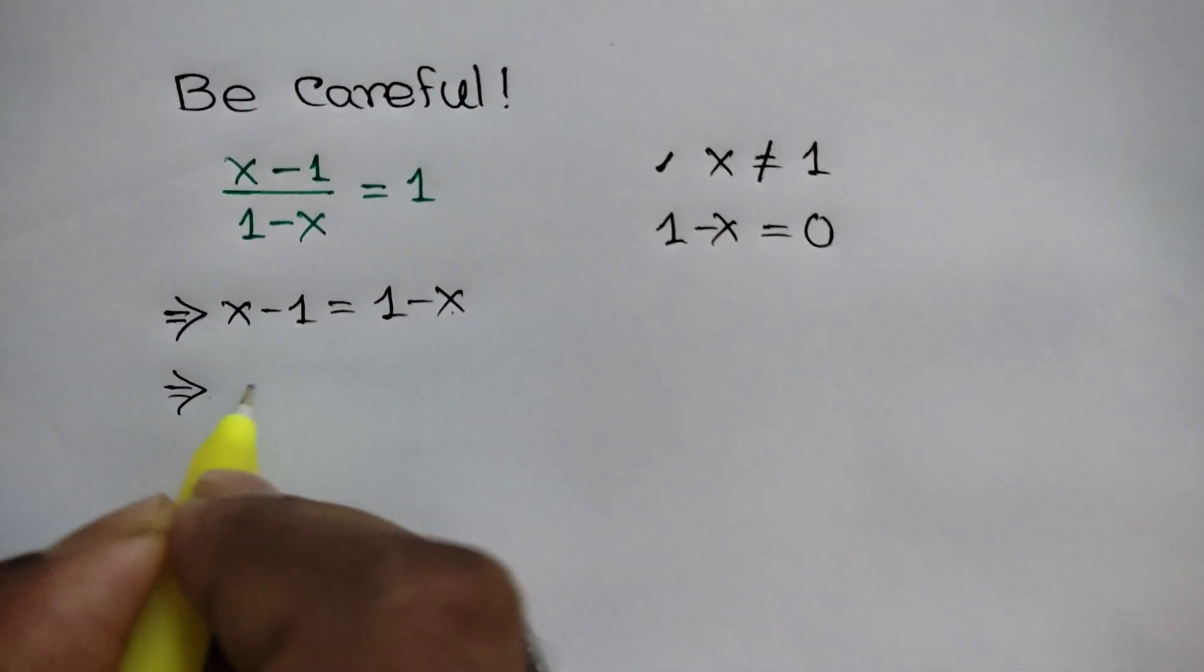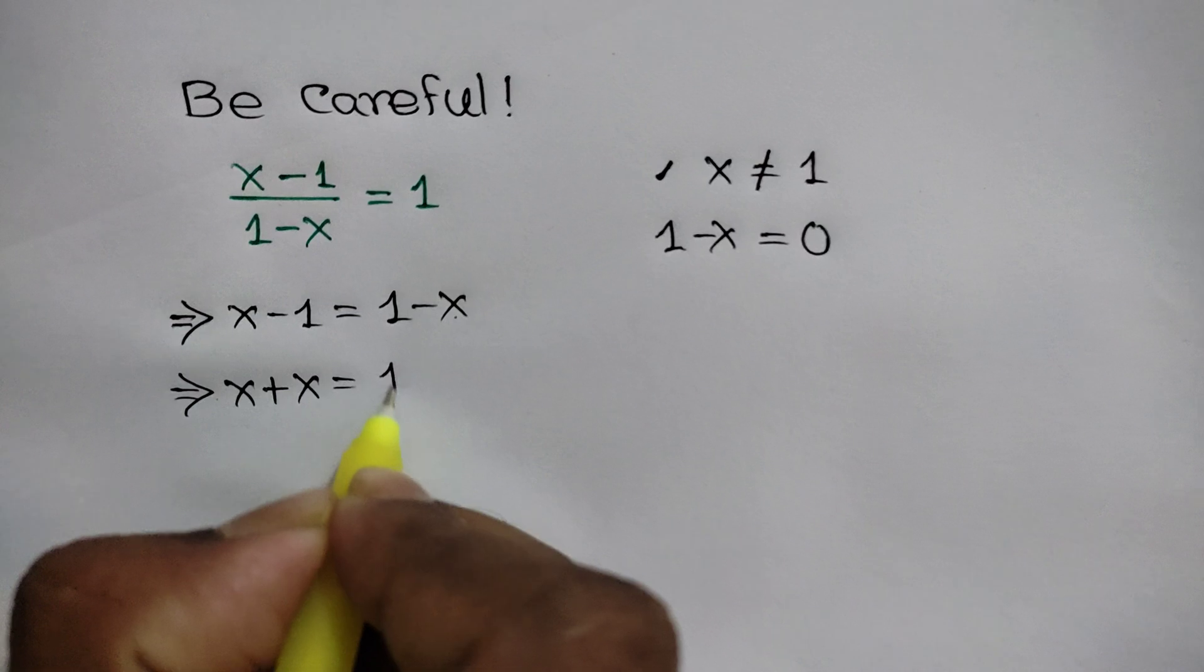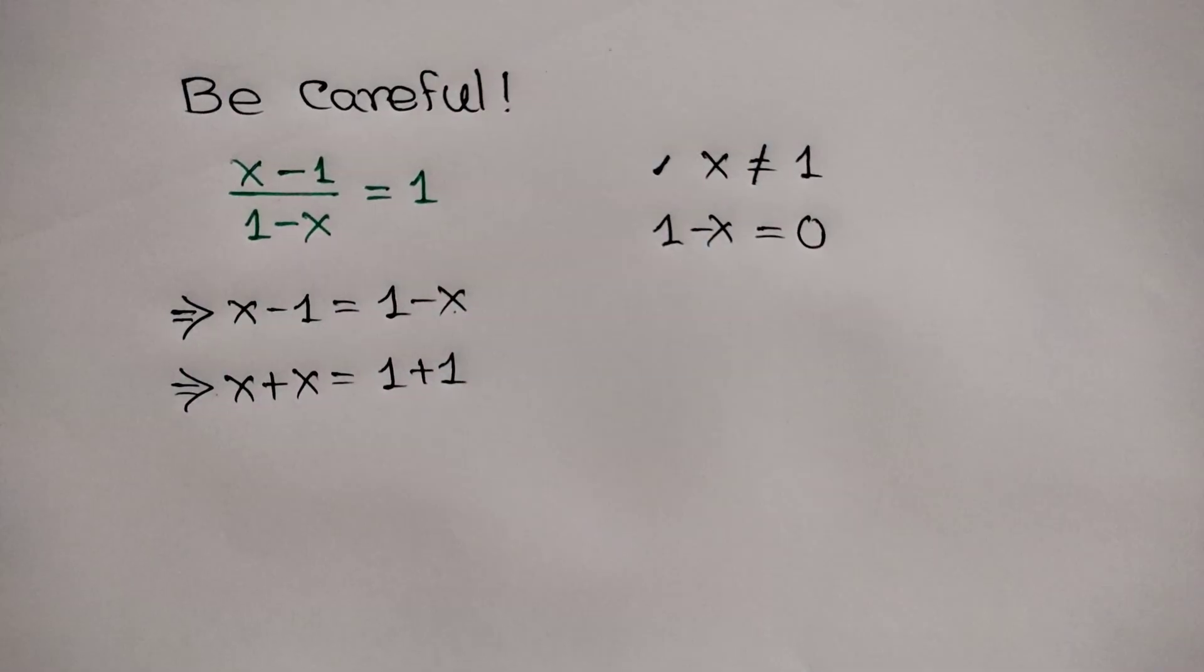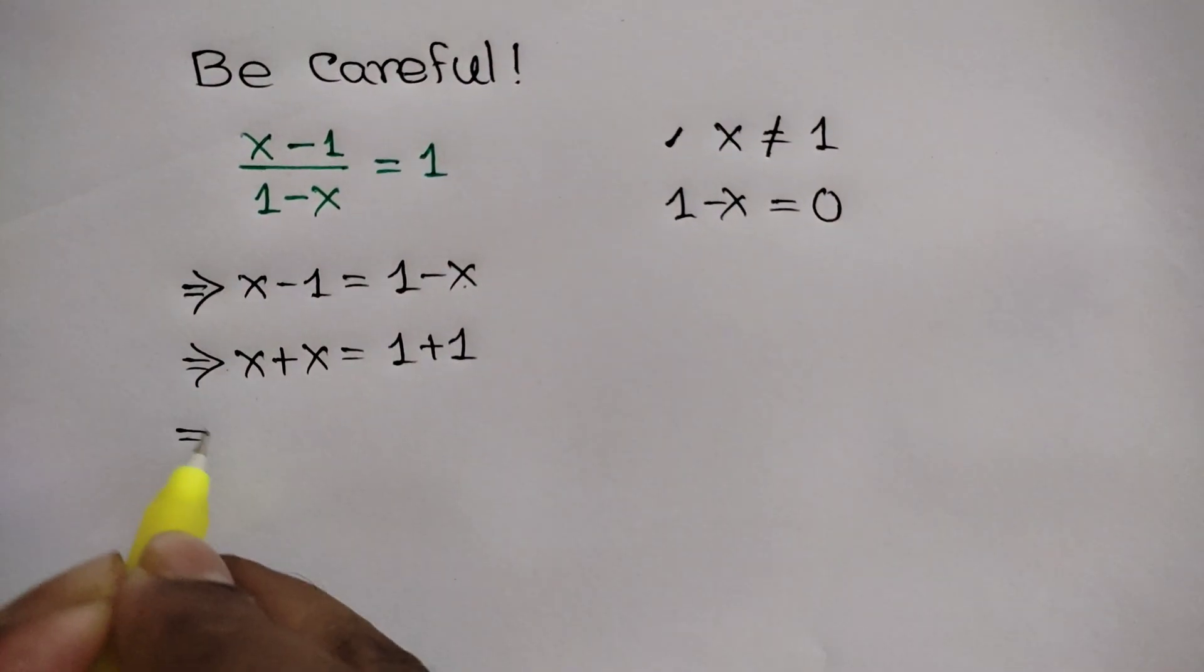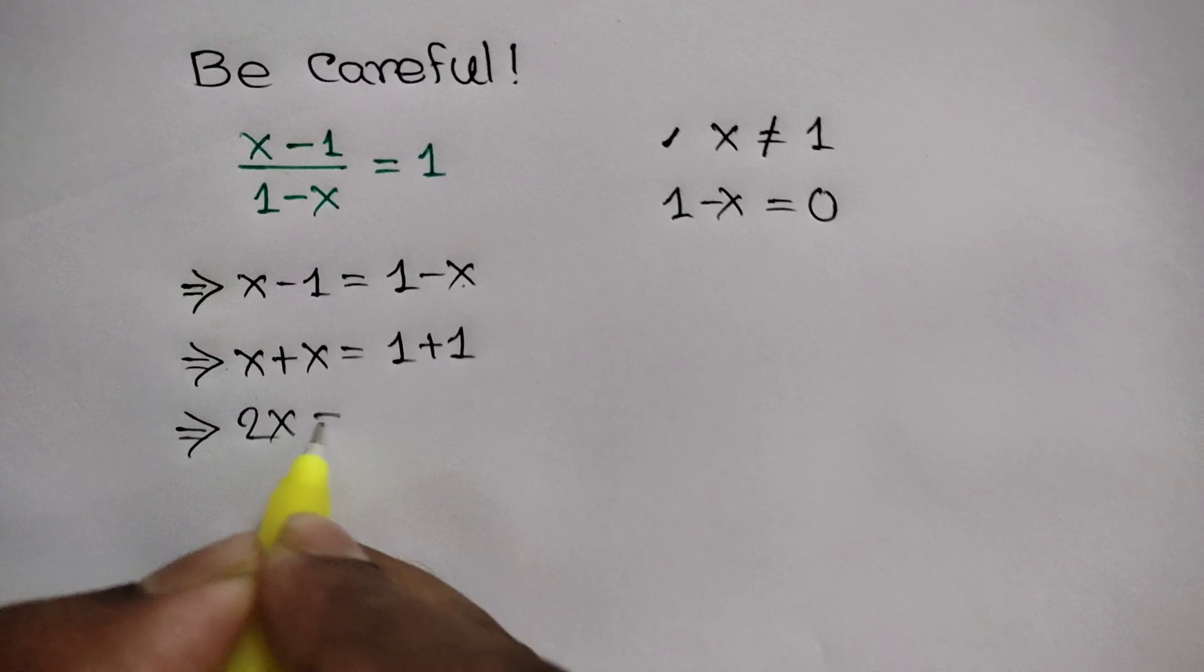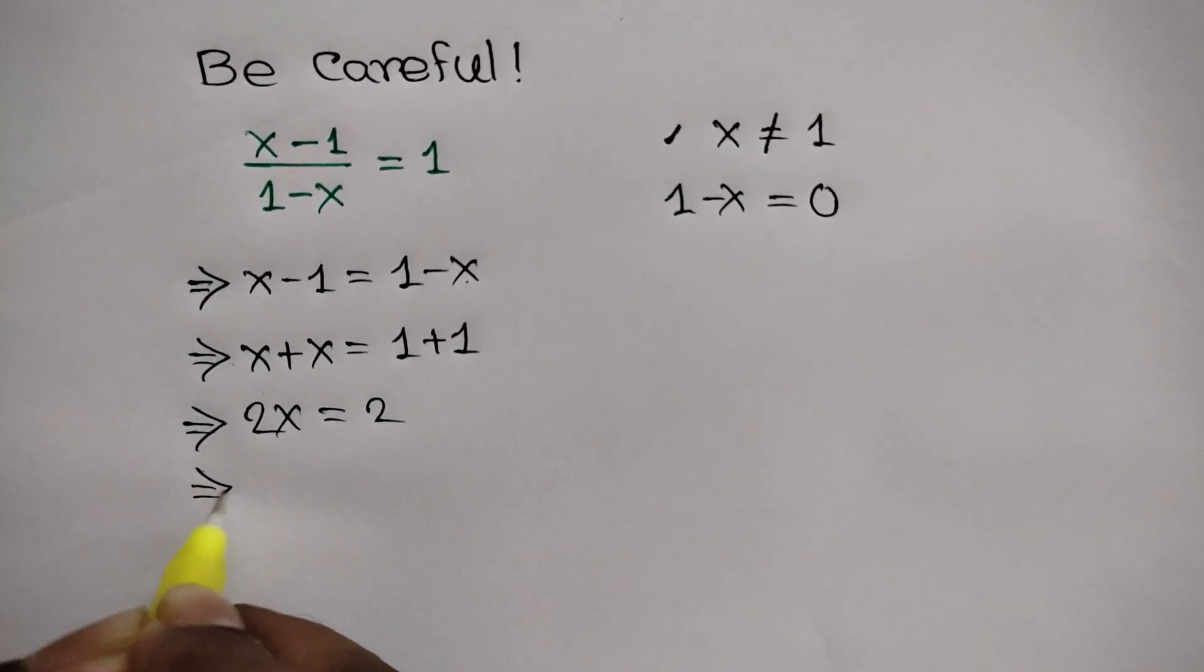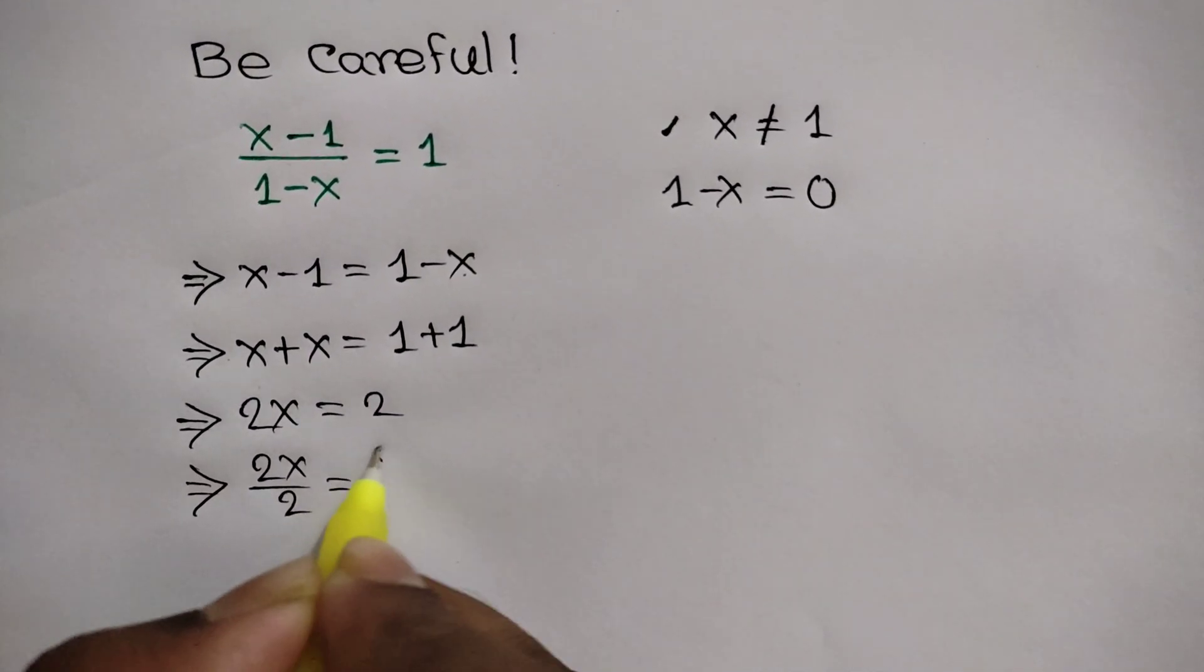Or 2x is equal to 2. Now divide both sides by 2, we can write 2x over 2 is equal to 2 over 2.